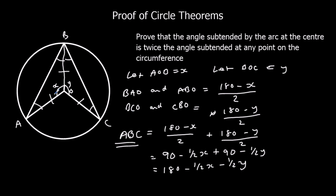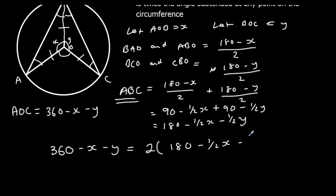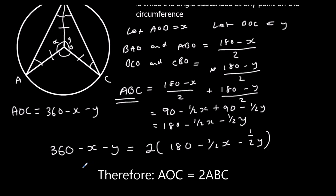Now we look at angle AOC. The angles around the point add up to 360, so AOC equals 360 − X − Y. We can verify that this is twice angle ABC: 2 × (180 − X/2 − Y/2) = 360 − X − Y. Both expressions equal 360 − X − Y, so therefore we've proved it.